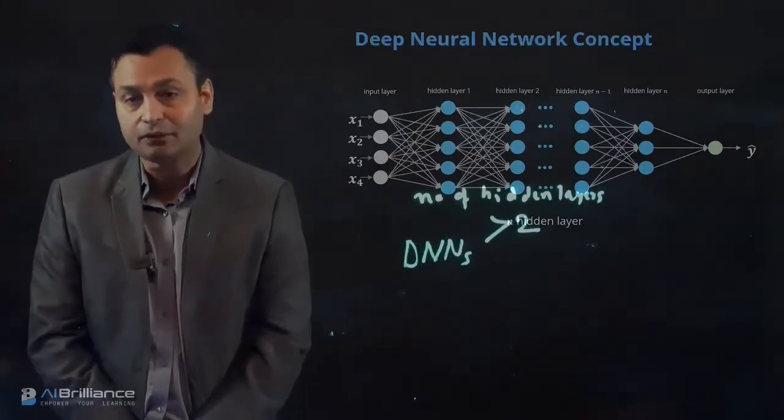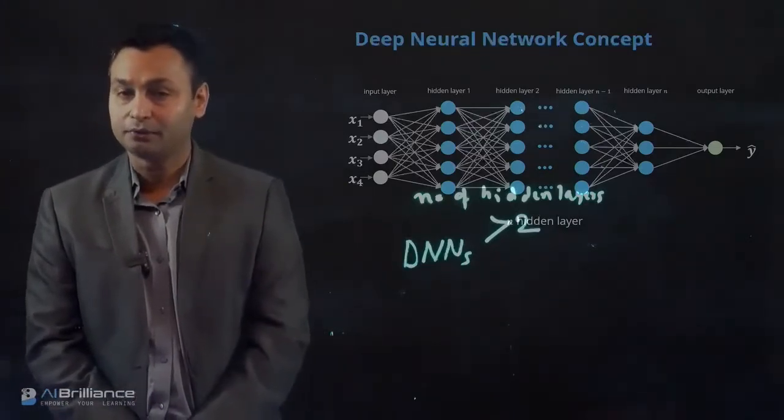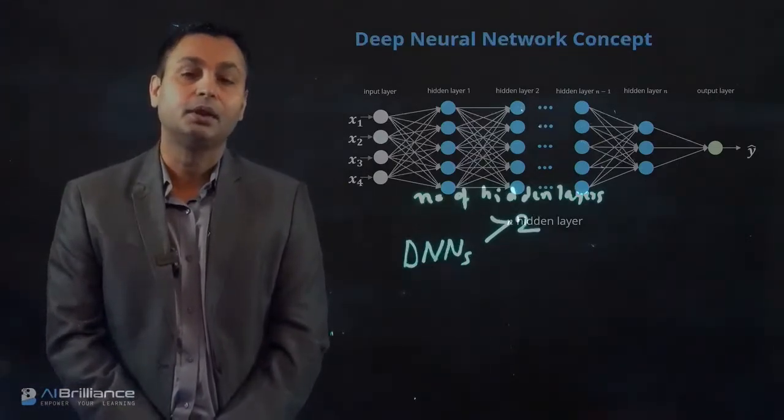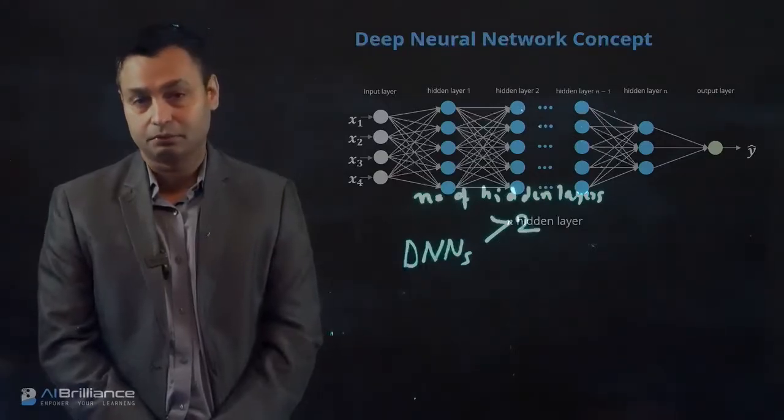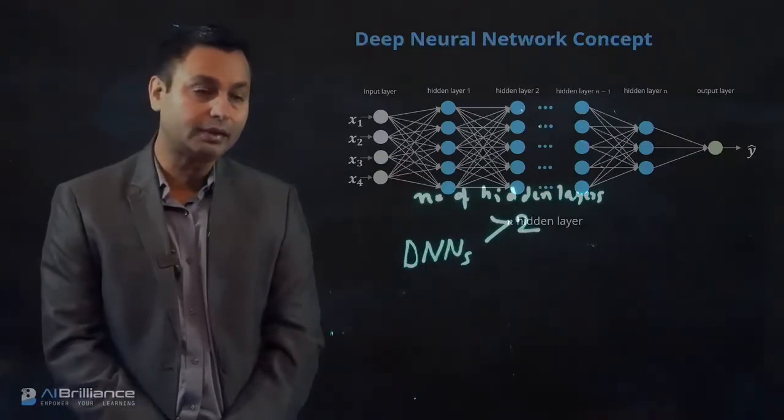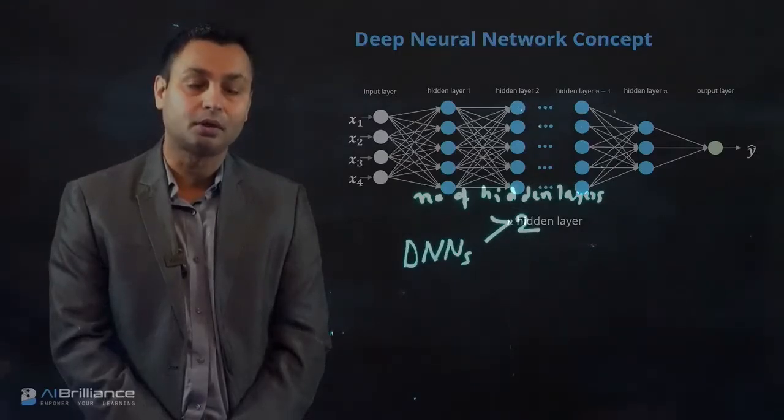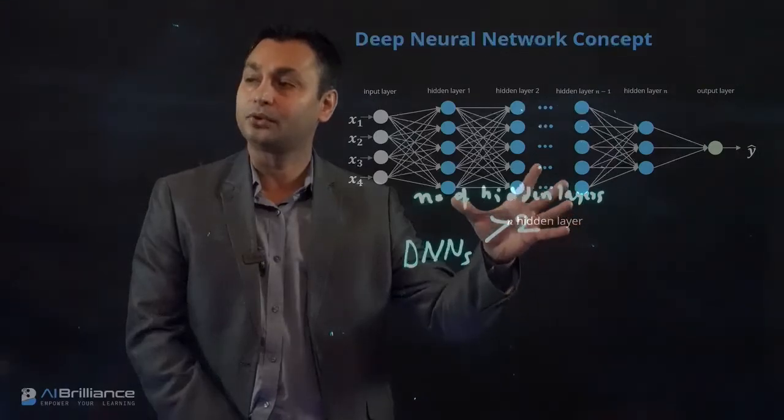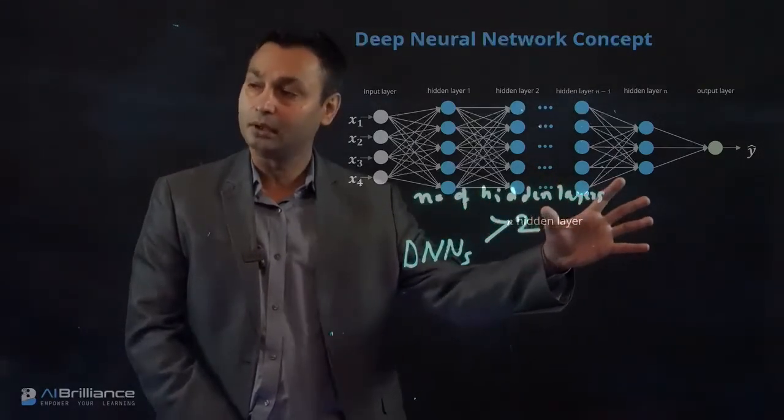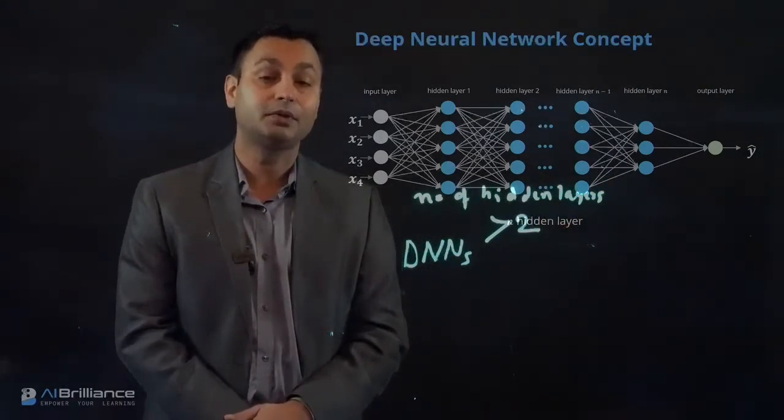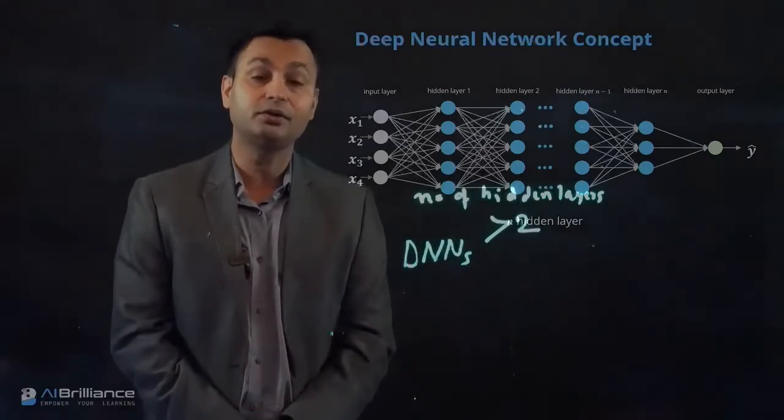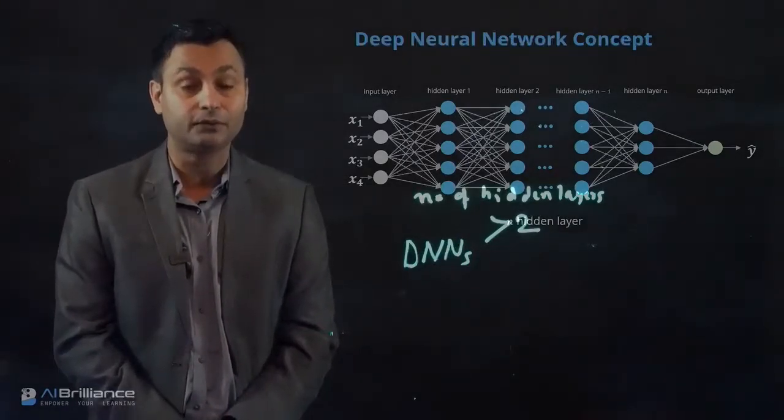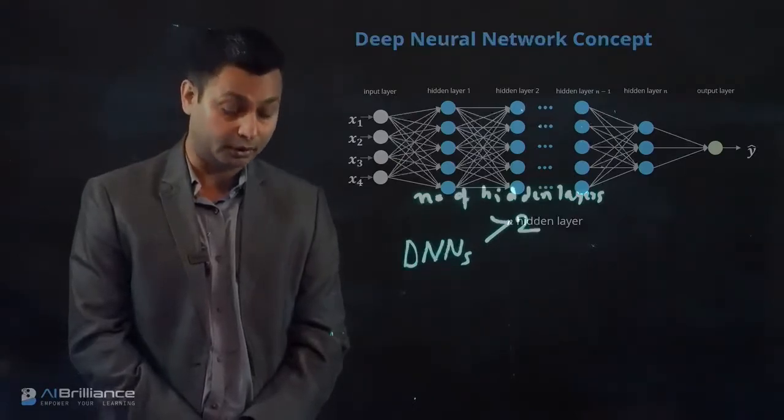But with the advent of high computing and new algorithms around 2008, we now have the ability to process the computational pipeline and train these multiple hidden layer units. That gives us higher accuracy. The accuracy has been found to be dramatically different and higher than what you can do for shallow neural networks.